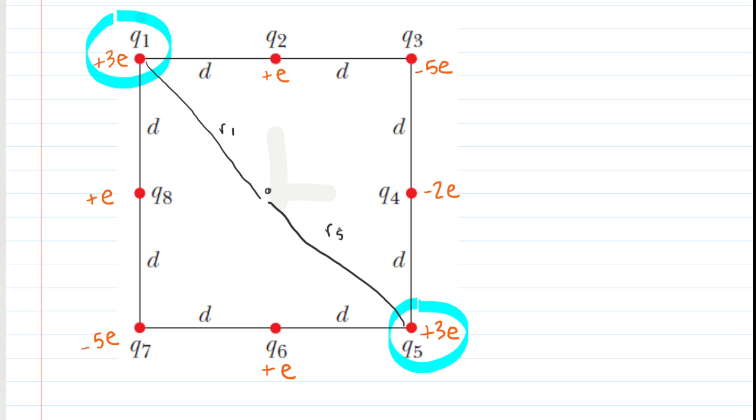Now we note that their electric fields would be calculated using the following equation. It would be E is equal to K times the charge magnitude divided by the distance squared. Now we've already said that the distance for each of the two charges is the same, and of course the charge is the same as well. It's positive 3E in both cases.